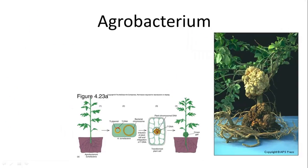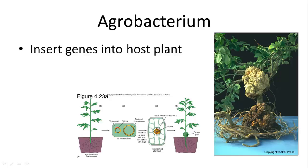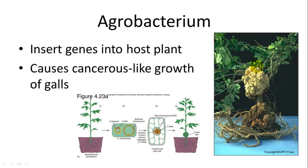One example of a bacterium that causes plant infection is Agrobacterium. There are many different species. They insert their genes into the host plant, and after infection it causes cancerous-like growth of galls — here's a gall and a depiction of one here. This can damage the plant and lead to its inability to move substances through the plant, and can ultimately kill it.